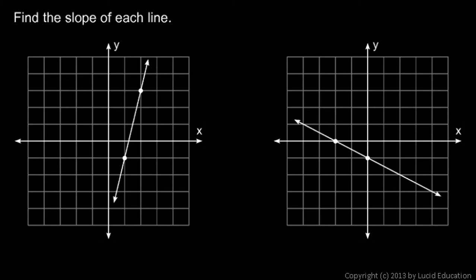Okay, two more examples, and these will be fast. We're told to find the slope of each line, and some points are marked, which makes it pretty convenient. Always think from left to right — so that's point one and that's point two. As we move from point one to point two, we go up four and over one. So the rise is four, the run is one, and the slope is rise over run, which is four. You could write four over one, but it's typical to just write four.